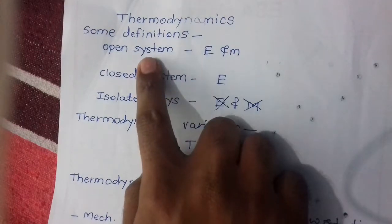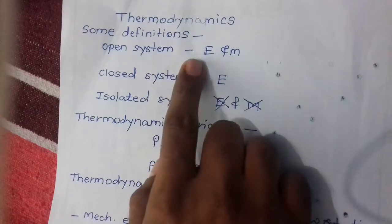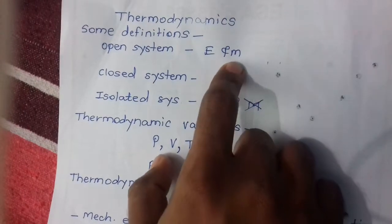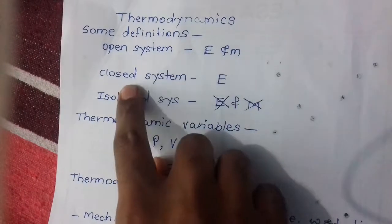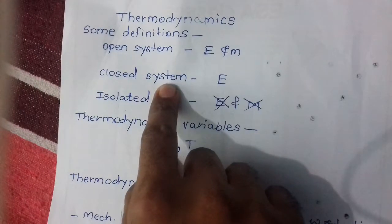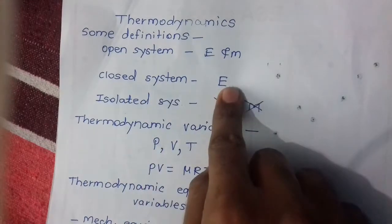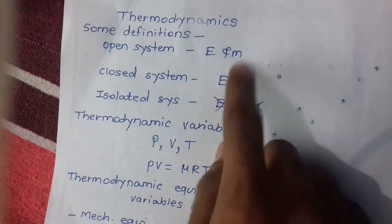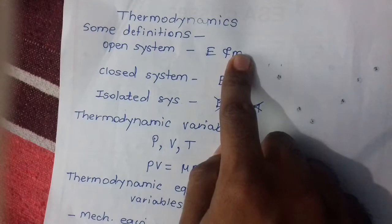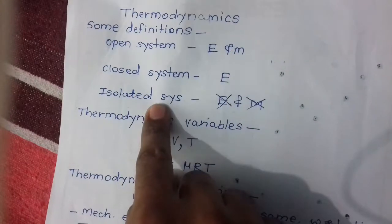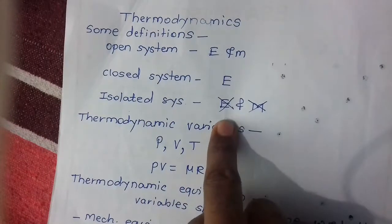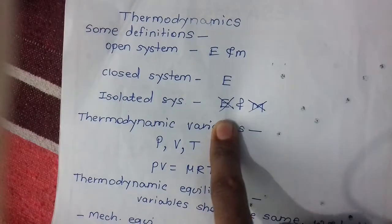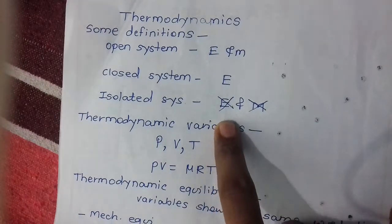Thermodynamics: an open system means exchange of energy and material is possible. A closed system means exchange of energy is possible but exchange of material is not possible. An isolated system means exchange of both material and energy is not possible.